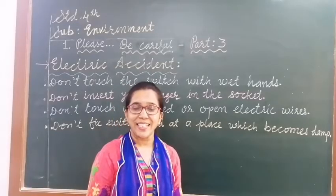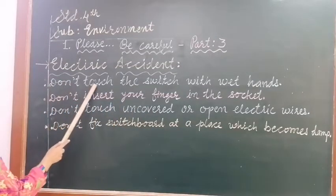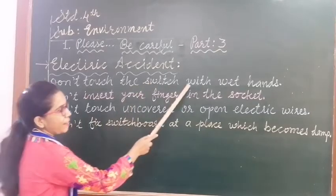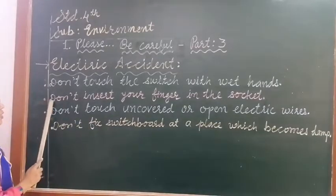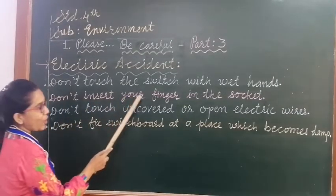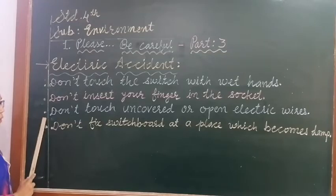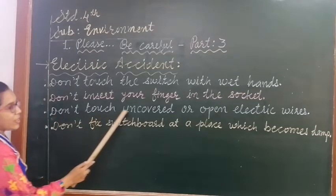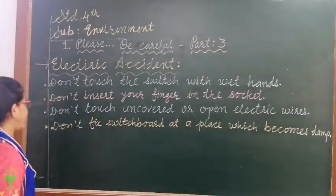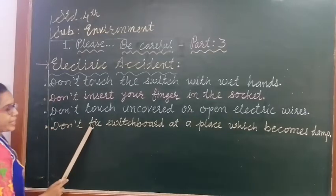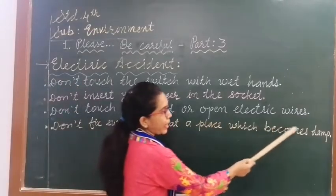Now let's see electric accident prevention. First point: Don't touch the switch with wet hands. Second point: Don't insert your finger in the socket. Third point: Don't touch uncovered or open electric wires. Fourth point: Don't fix a switchboard at a place which becomes damp.